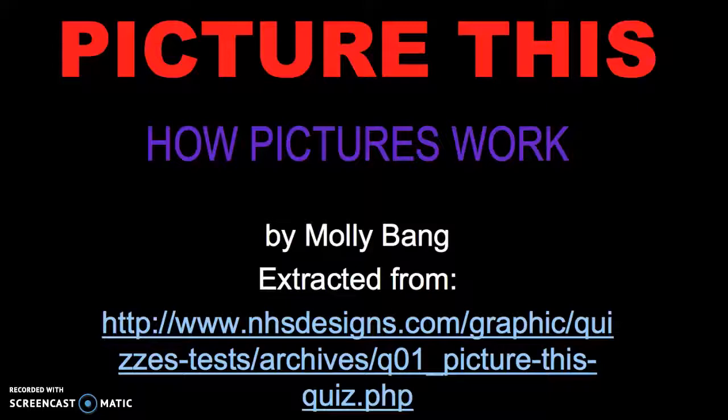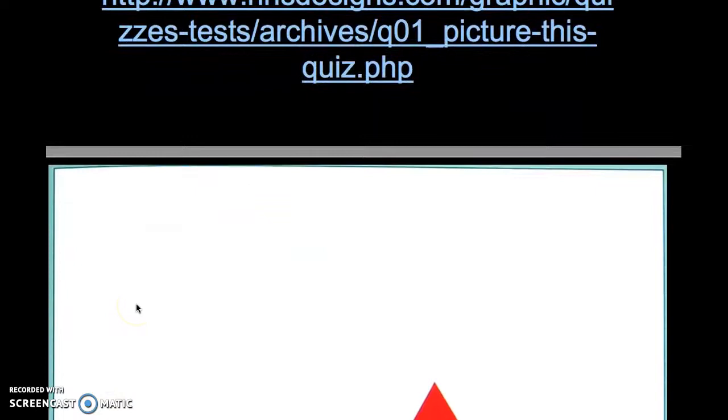Welcome to Reading Graphic Narratives Online. This is the visual guide for Picture This: How Pictures Work, written by children's book illustrator Molly Bang. In this episode, we encounter Bang's version of Little Red Riding Hood using shapes, colors, and spatial placement as our theoretical guide. You will be asked to consider these theories often as you progress through our class, so hold on to your picnic baskets as we venture through the woods. I'm Dr. Shannon Mortimer-Smith, and I'll be your video guide.